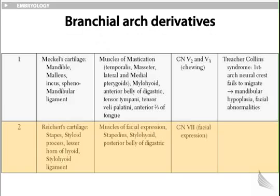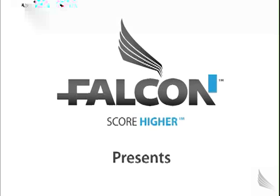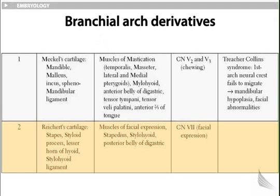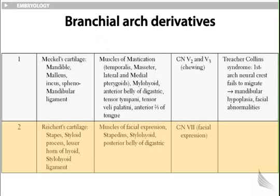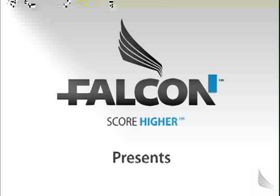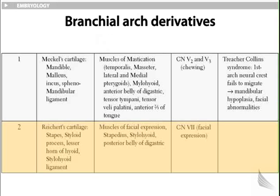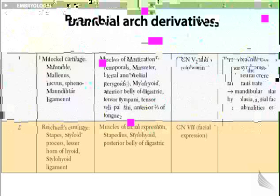Arch two: Reichert's cartilage — the second arch mnemonic is S — stapes, styloid process, lesser horn of hyoid, and stylohyoid ligament. Muscles include muscles of facial expression, stapedius, stylohyoid, and posterior belly of digastric. Nerve: facial nerve, seventh cranial nerve.